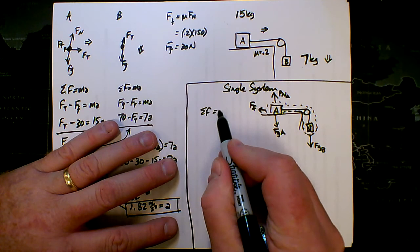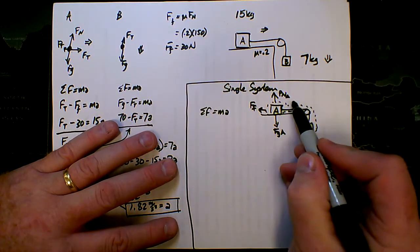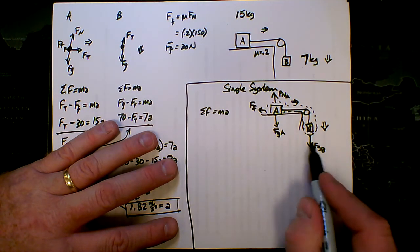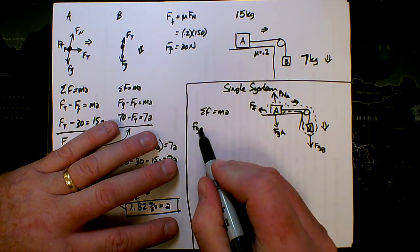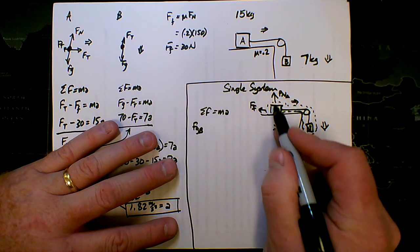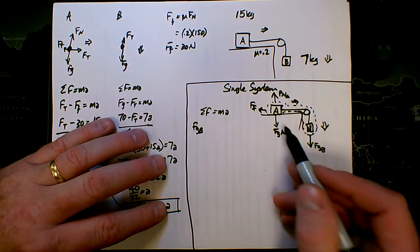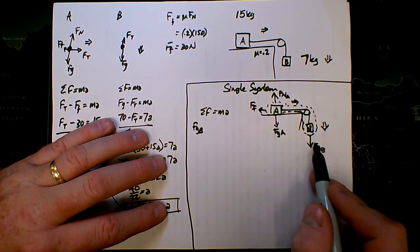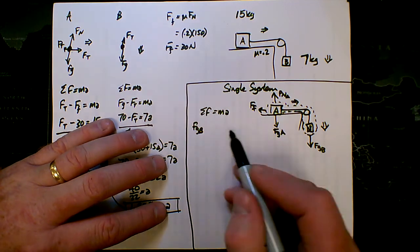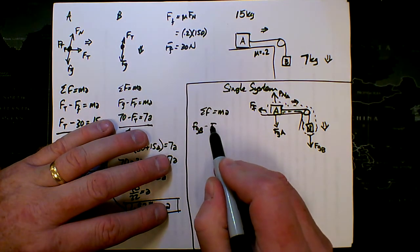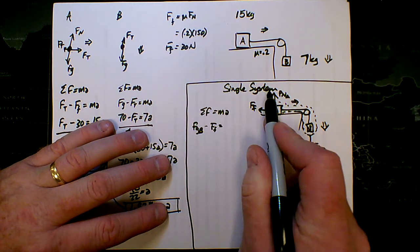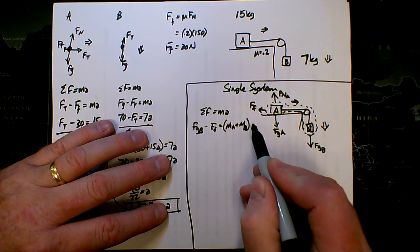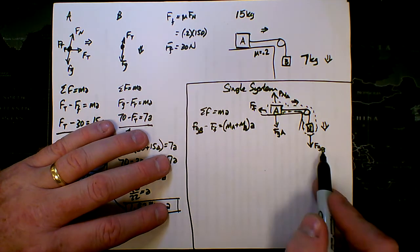Then I do net force equals mass times acceleration. Net force here, I have to remember my directions. Go minus stop. So the go direction, I've got the Fg of B. Notice Fg of A and the normal force are going to cancel each other out. They don't affect the acceleration at all. But the friction is opposing. So Fg of B is pulling on the system in the go direction. Friction is pulling on the system in the stop direction. So go minus stop. Fg B minus friction equals. Now because this is a single system, M is the combined mass of A and B.